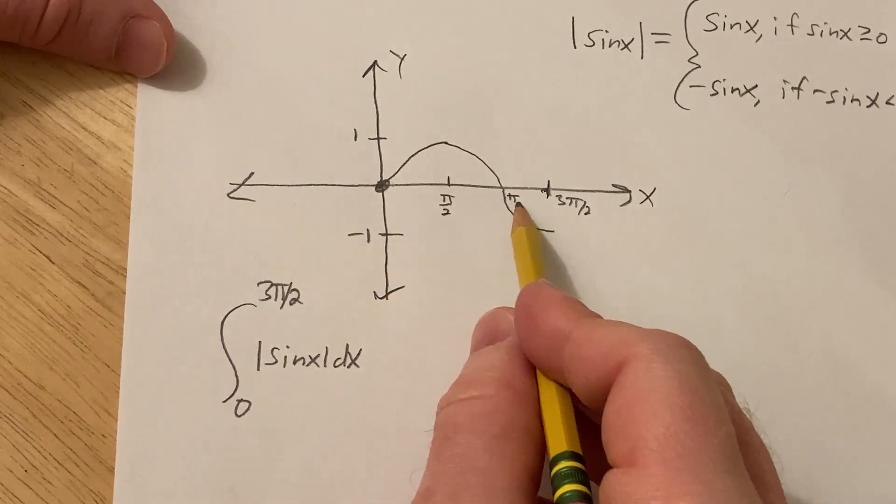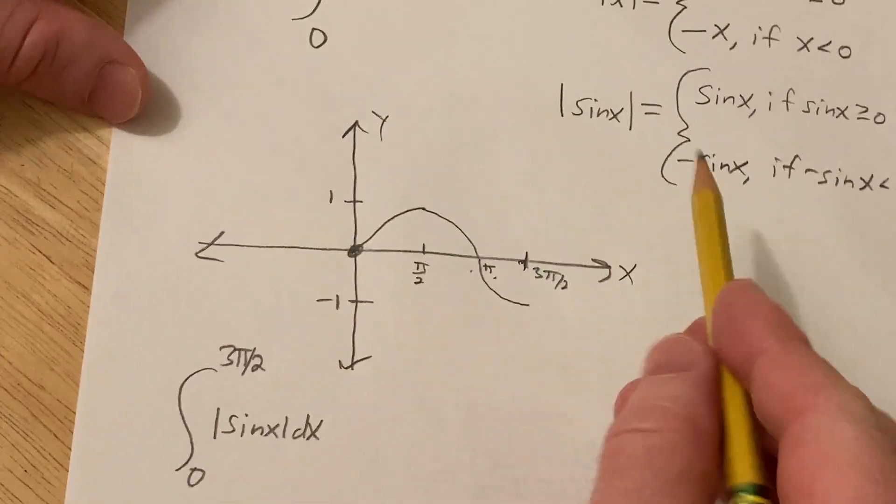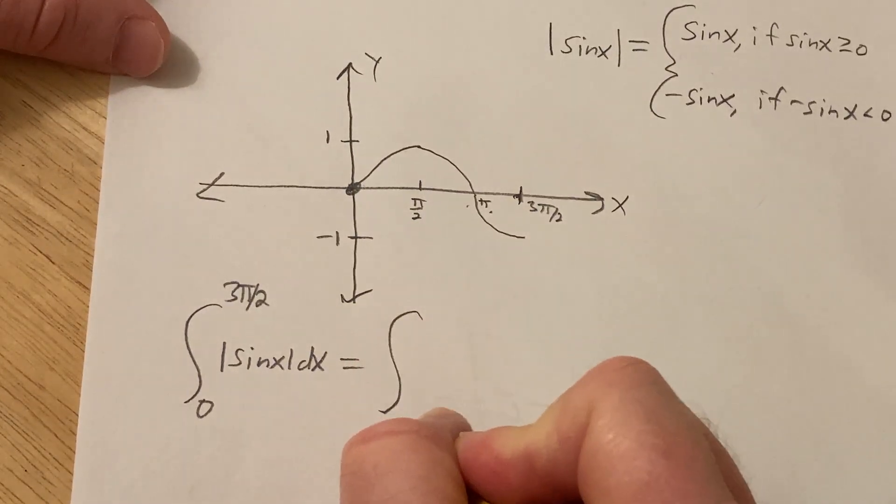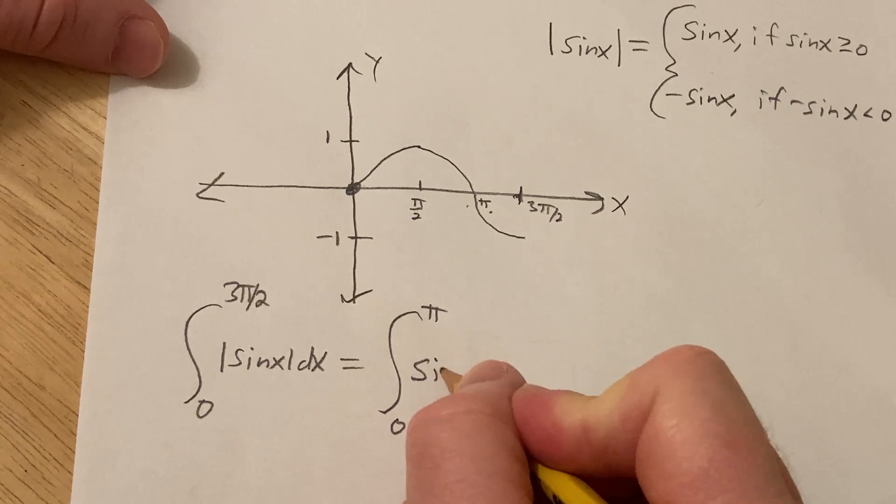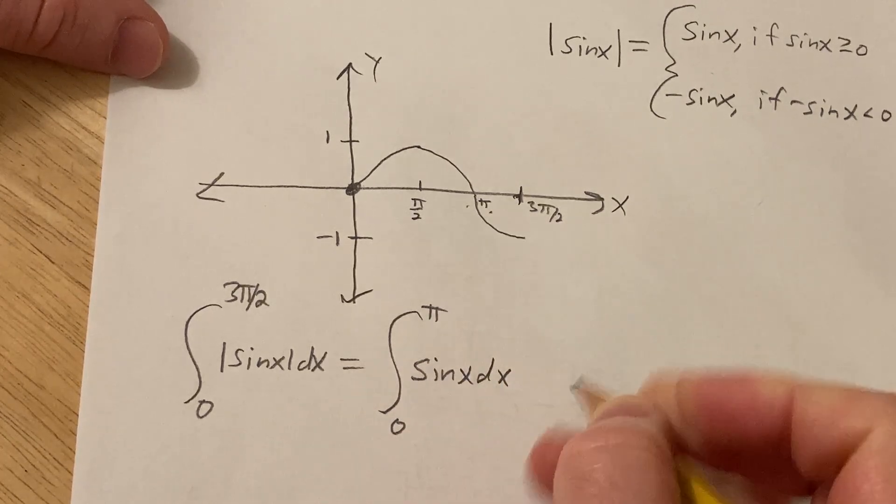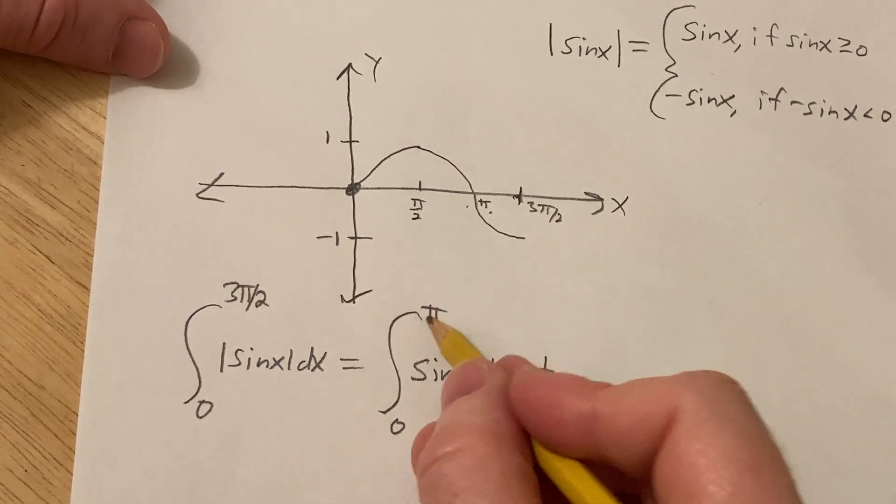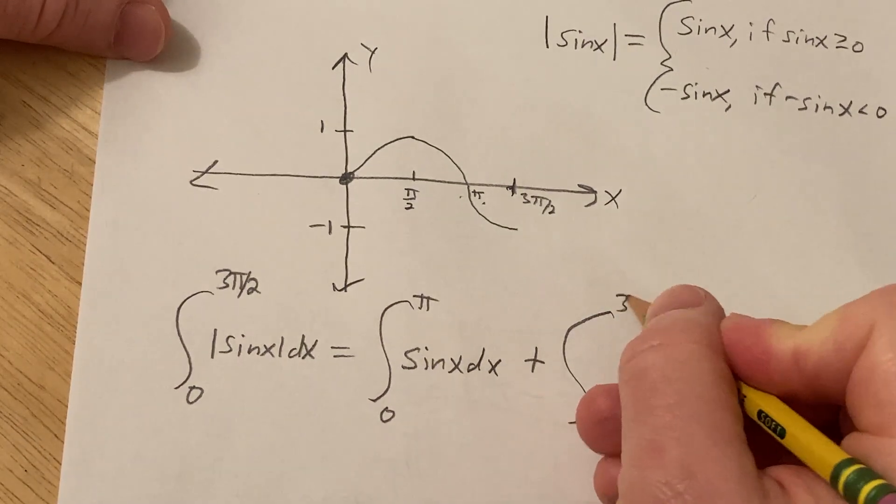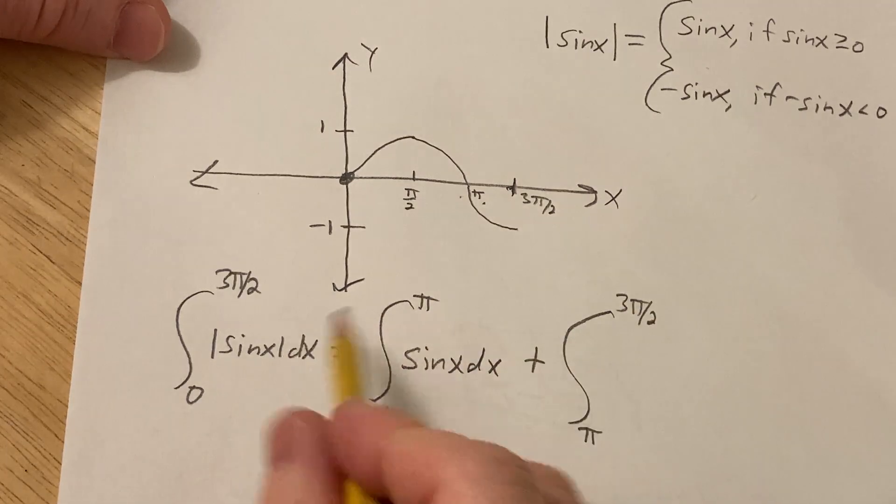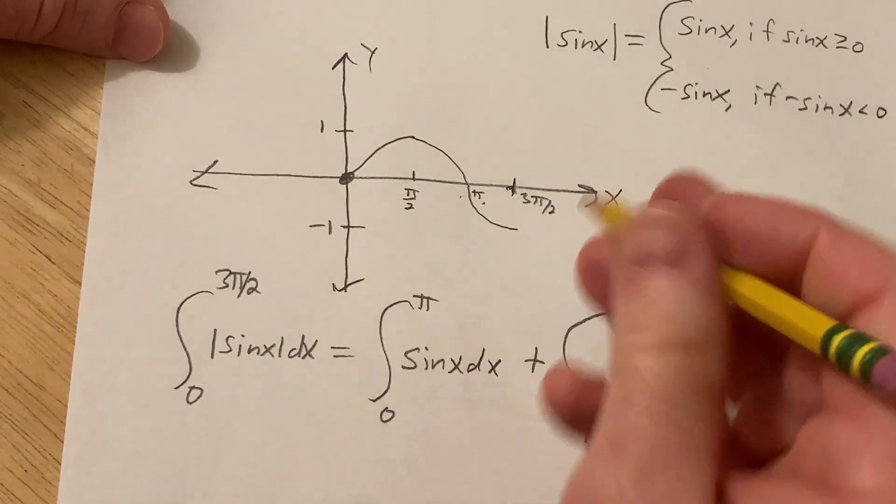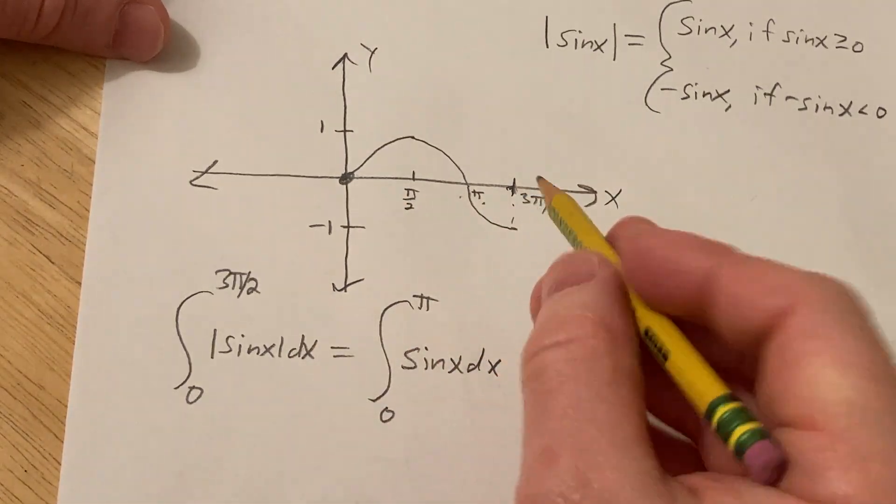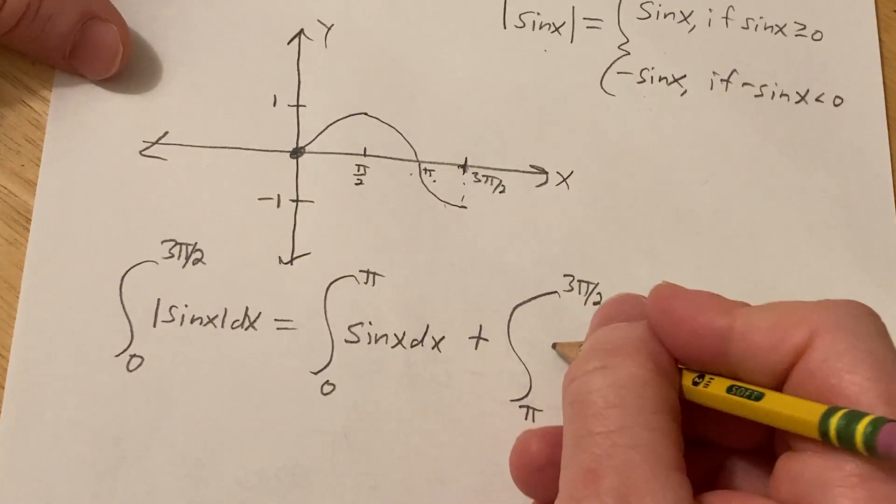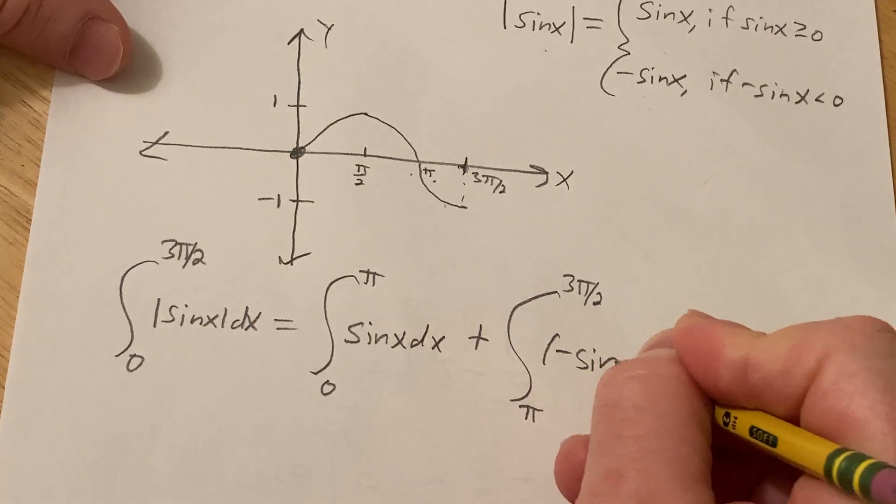So between 0 and pi, it's going to be positive. So the formula says it's just sine x. So we go from 0 to pi, and that's just sine x with respect to x. Plus, and then we have to go from pi to 3 pi over 2. We're basically breaking it up at pi based off the picture. And here it's negative, right? So we're going to be using this formula here. So this will be minus sine x dx.